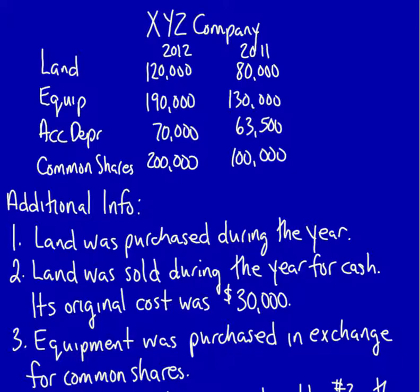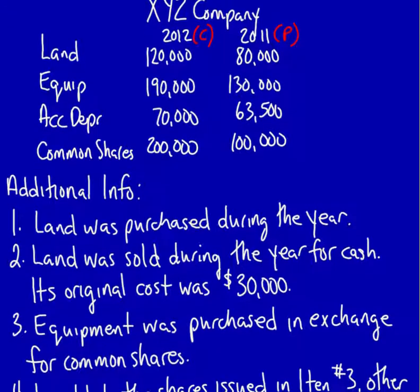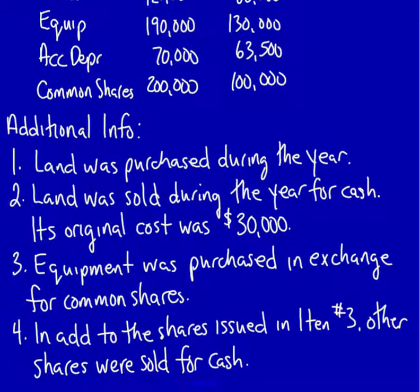In this case, we know that this is the current year and this is the prior year. We have land, equipment, accumulated depreciation, and common shares. We have additional information which tells us immediately that we need to do a T-account proof.